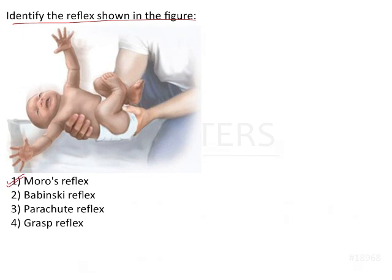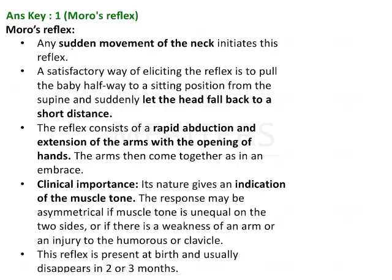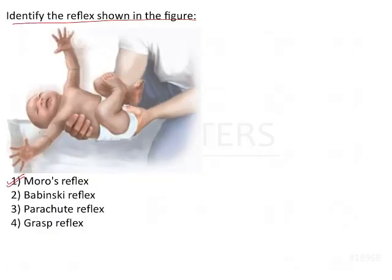The Moro's reflex is elicited when there is any sudden movement of the neck. As you can see in this image, the child is being held by the parent but the neck of the child is unsupported — this is what initiates the response. When you lift the baby from a supine to a slightly upright position without supporting the head and allow it to fall back a short distance, the infant automatically abducts and extends his arms.